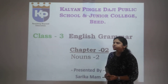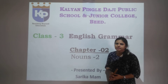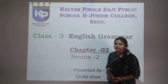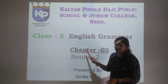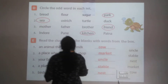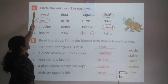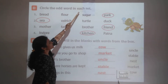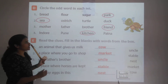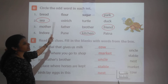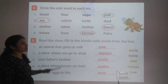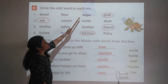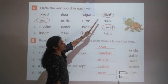We have solved some part of the exercise of chapter 2, and the remaining part is Question C and Question D. Circle the odd word in each set. The odd word means a different word — we have to circle it. First set: bread, flour, sugar, and pound.